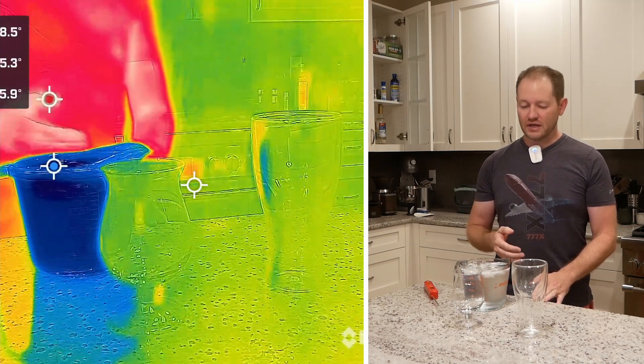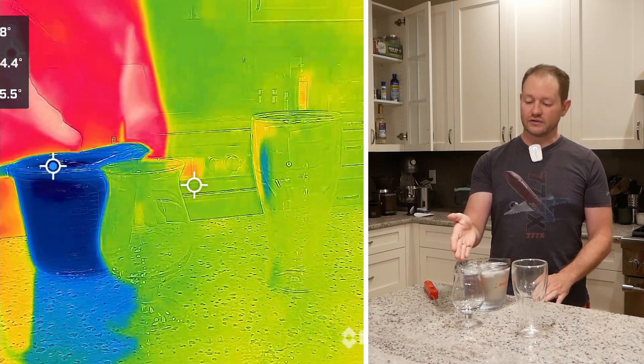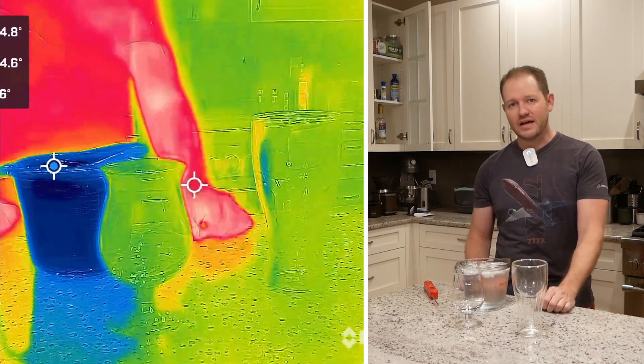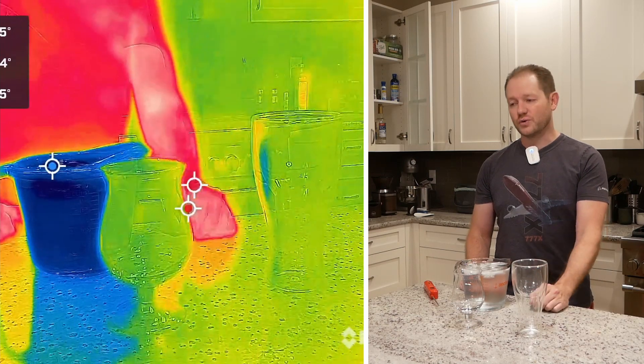I've got some ice water, then I also have a regular 12-ounce tulip glass here, uninsulated, and then I have our upside-down beer glass right here, also 12 ounces.